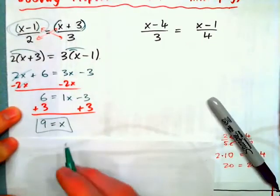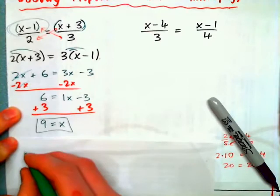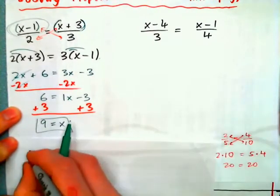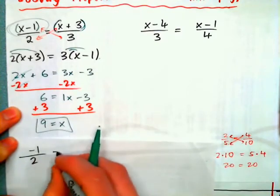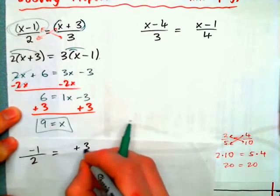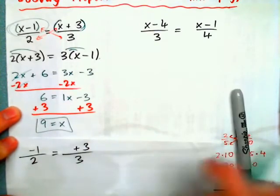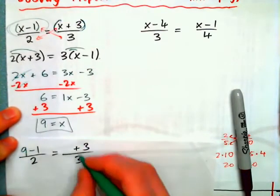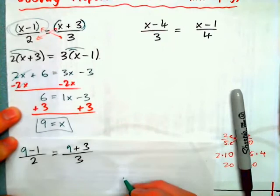So, if we were to check the answer in the original equation, we would get something minus 1 over 2 is equal to something plus 3 over 3. So, plug 9 in for x, we get 9 minus 1 over 2 equals 9 plus 3 over 3.